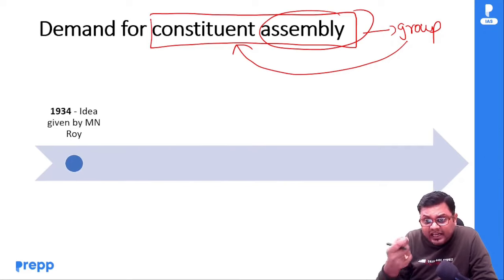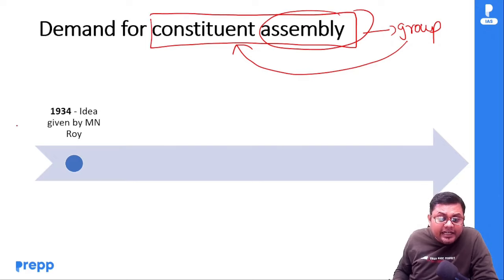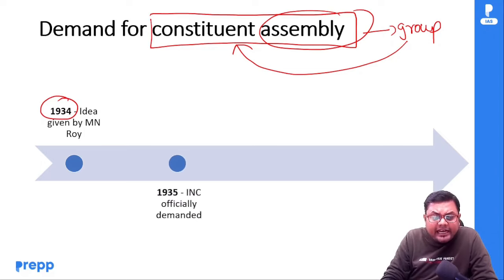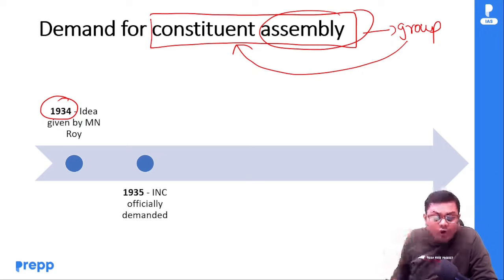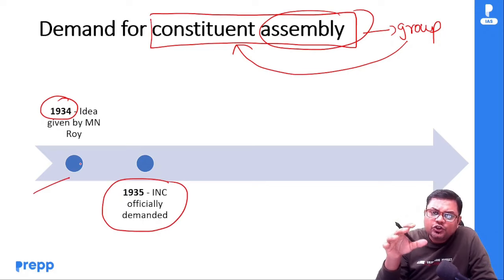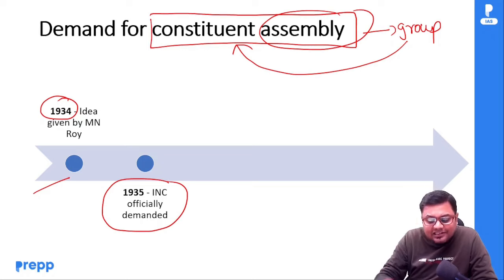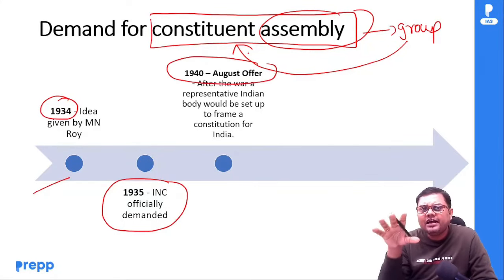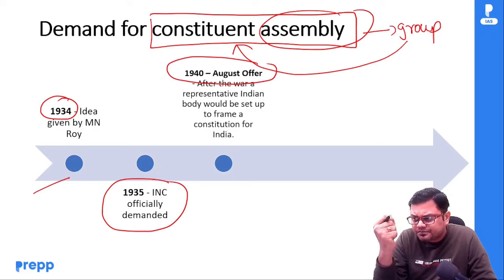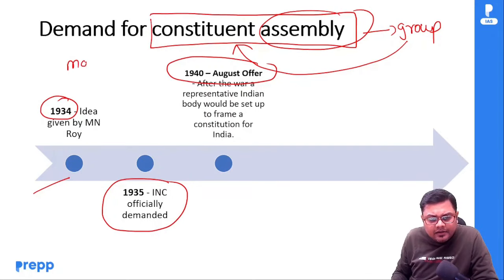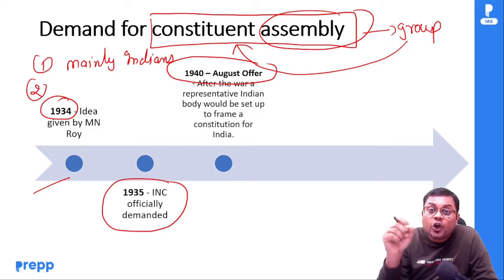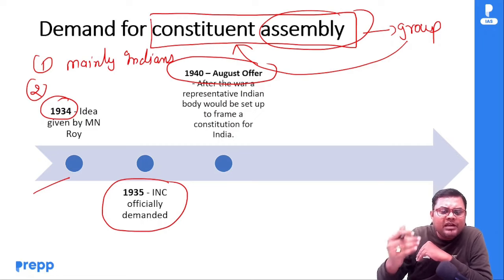Constituent assembly के लिए सबसे पहले demand 1934 में हुई, और M.N. Roy ने सबसे पहले यह idea put forward किया था। उसके बाद in 1935, Indian National Congress ने officially demand किया था कि एक constituent assembly बननी चाहिए जो India का constitution बनाए। इस demand को British government ने accept किया था in the August Offer of 1940। Government ने कहा: after the second world war एक constituent assembly बनाई जाएगी जिसमें mainly Indians will be there, and without the consent of minorities no future constitution will be adopted।